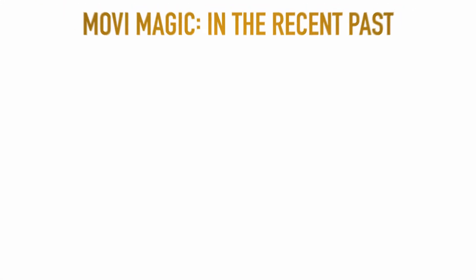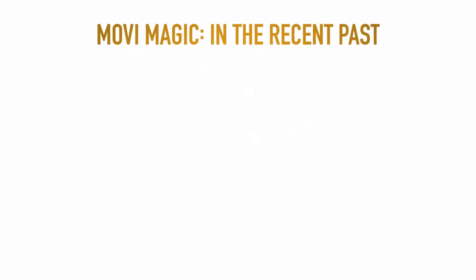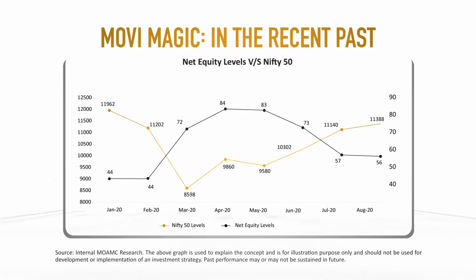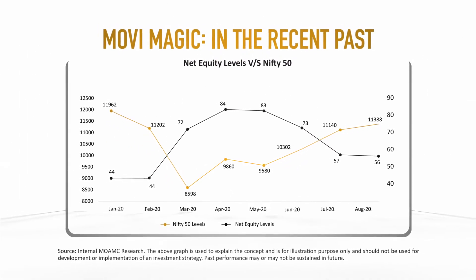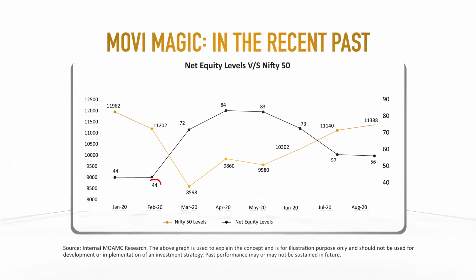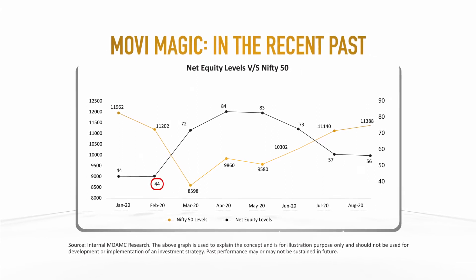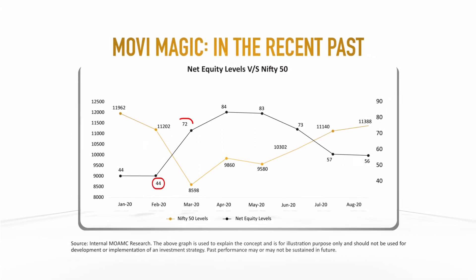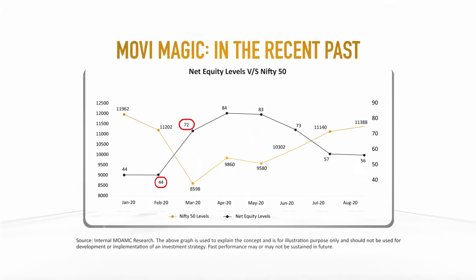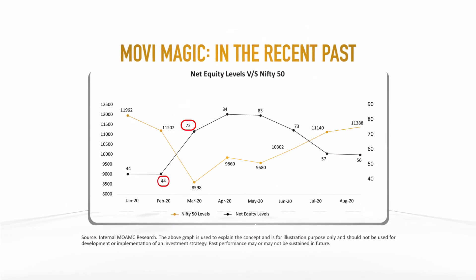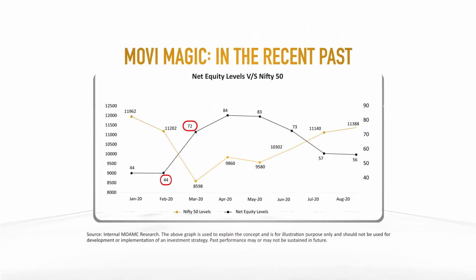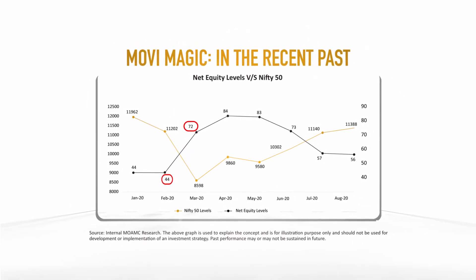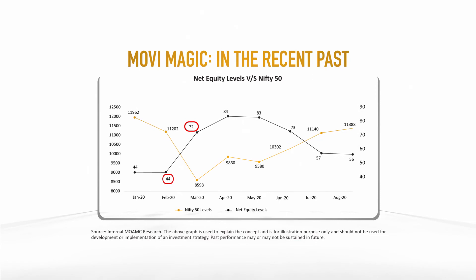Let's look at MOVI magic in the recent past. In February, before COVID-induced lockdowns, the net equity level was 44%, which was later increased gradually to 72% as the market offered good valuations. And when the market started recovering, the MOVI levels increased, thereby suggesting profit booking and eventual reduction in net equity levels back to 50%–56% in early September.